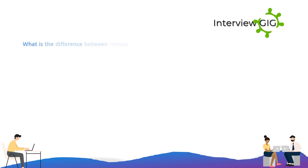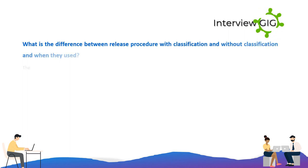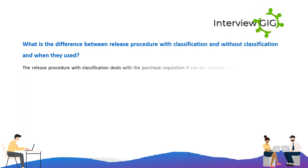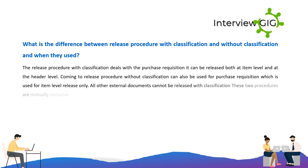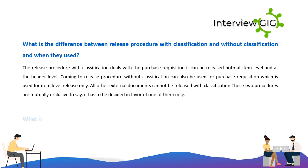What is the difference between release procedure with classification and without classification, and when are they used? The release procedure with classification deals with a purchase requisition and can be released both at item level and at the header level. The release procedure without classification can also be used for purchase requisition but is used for item-level release only. All other external documents cannot be released with classification. These two procedures are mutually exclusive — it has to be decided in favor of one of them only.